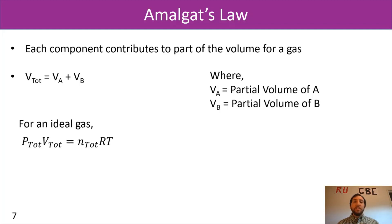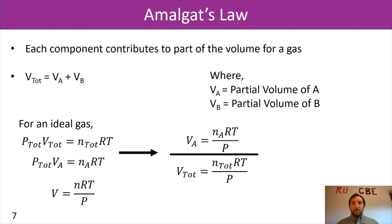If we focus just on one of our species, we would have P total times the VA contribution, volume contribution by A equals number of moles of A times RT. In both of those cases, I can manipulate this equation to be V equals NRT over P. If I took the volume contribution of A and the equation associated with it, divided it by the total volume and the associated components, we would have this setup. In this case, we can simplify it down, and we can get VA over V total equals YA, the molar composition of A.